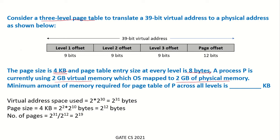This is the way the 39-bit virtual address is being used to translate that virtual address to the physical address. At each level of the page table, the bits are used to map into that particular page table of that level. We will try to understand how this happens and what is the minimum amount of memory required.